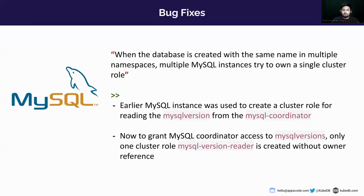Here are some of the bug fixes done in this release. There was an issue where database pods created with the same name in multiple namespaces caused multiple MySQL instances to try to own a single cluster role. We have fixed this so that now, in order to grant MySQL coordinator access to MySQL version, only one cluster role — the MySQL version leader — is created without the owner reference.